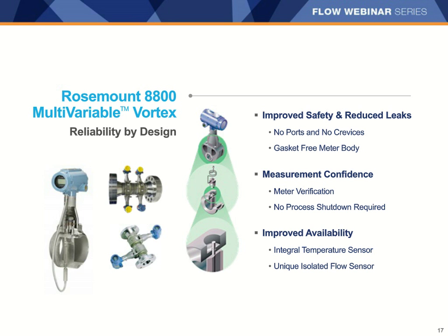Rosemount offers a dual vortex version that can be used where one meter is used for process control and the other for the safety loop, or you can use the dual vortex for redundancy in the safety loop. In situations where you need two-out-of-three voting for safety, a quad vortex is also available that gives three measurements for the safety system. A really nice feature is that you only have a single set of straight runs, so installation costs are reduced as well.